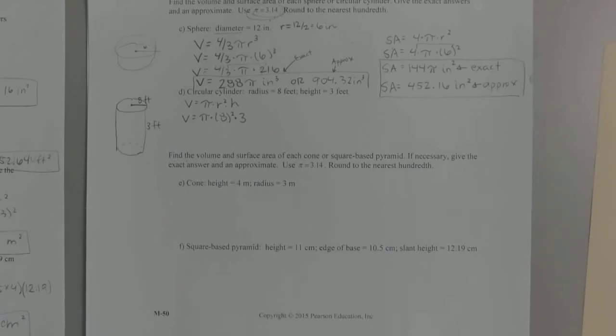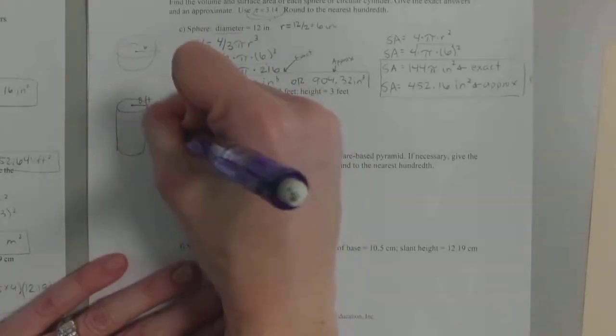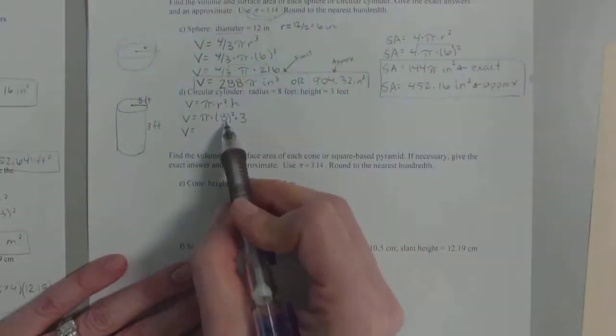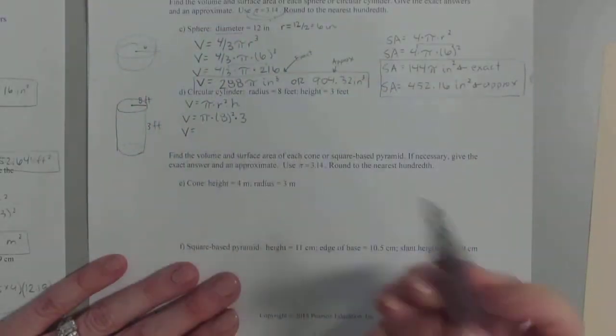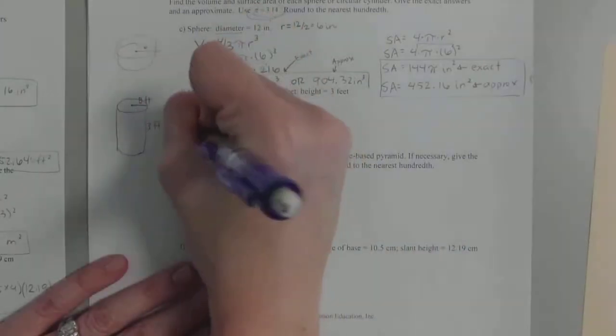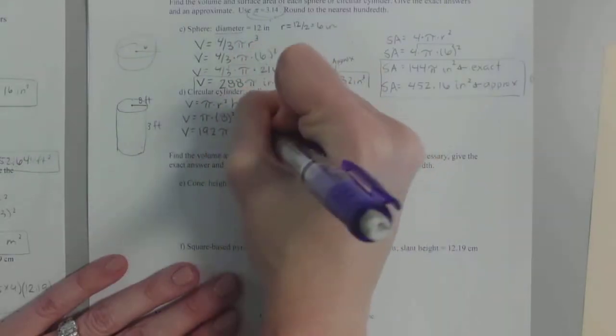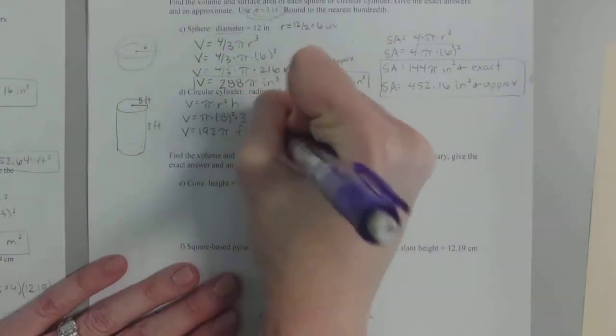So how are we going to figure out our exact area, guys? What are we going to do? Square the 8 and multiply by 3 and leave pi there. And you can put pi in front or back. It doesn't really matter. Typically you put it in back. So if you square 8, you get 64. And then 64 times 3, do you guys get 192? So we have 192 pi and then feet cubed would be the exact.